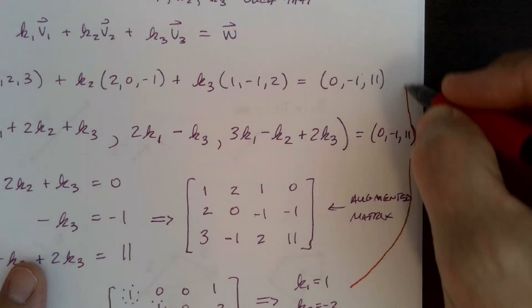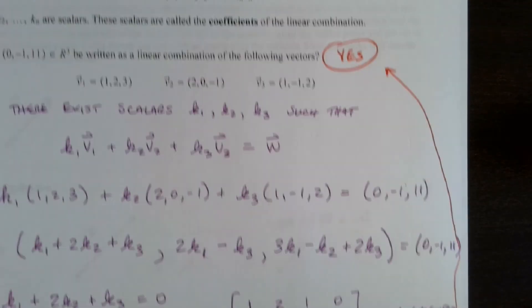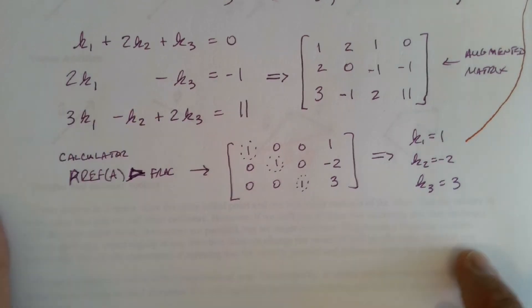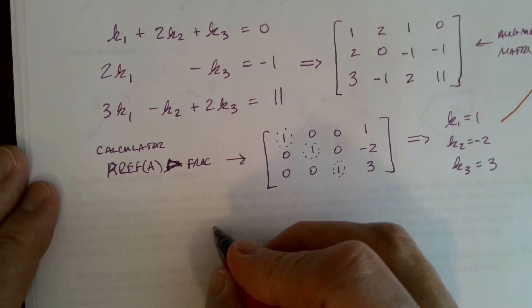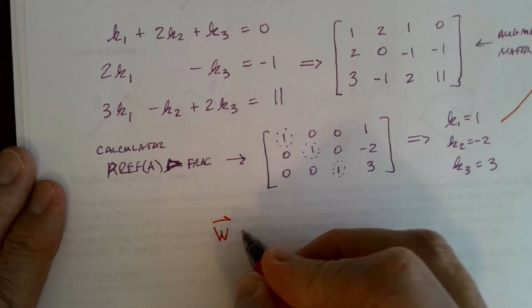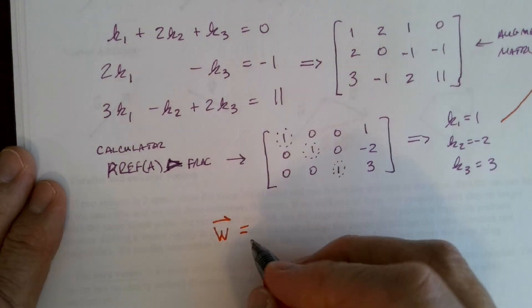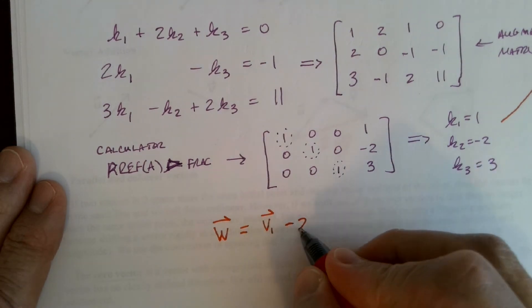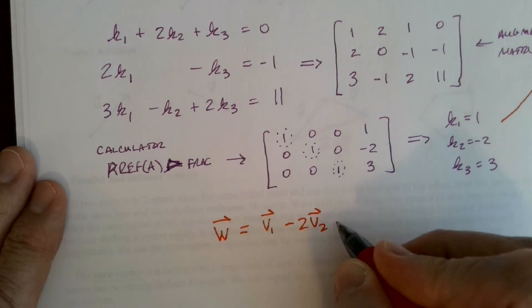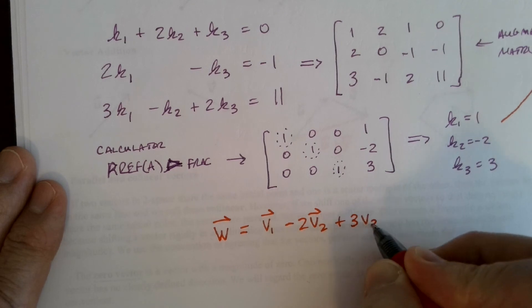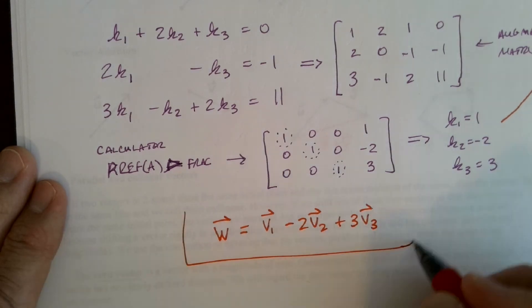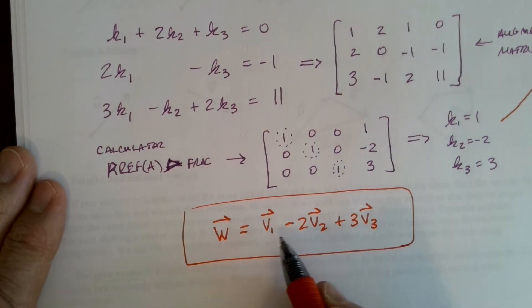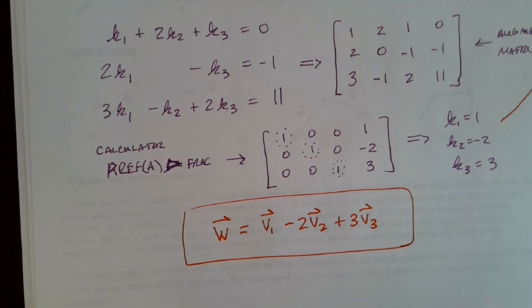So let's bring this all the way to the top. Yes, because we have a solution. And so in particular, I can write the vector W as K1 V1, or 1 V1, minus 2 V2, plus 3 V3. And you should check and make sure by actually doing the arithmetic on this, we've got V1, V2, and V3 are given, and show that it indeed equals the vector W.